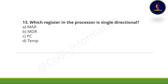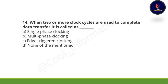Thirteenth question: Which register in the processor is single-directional? Option A, memory address register (MAR); option B, MDR; option C, program counter; option D, IR. The correct option is option A, which is memory address register.